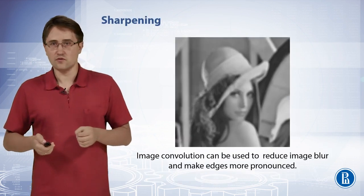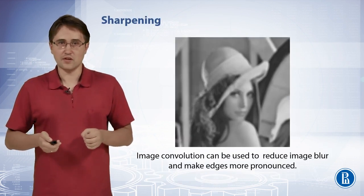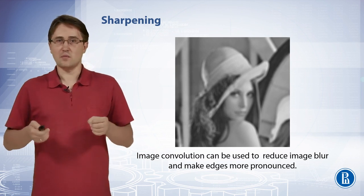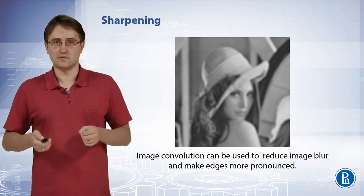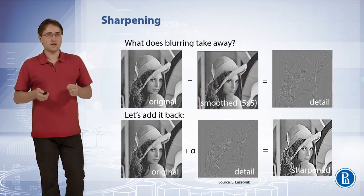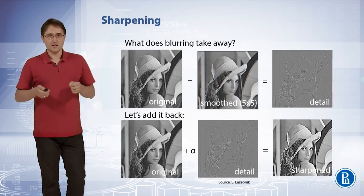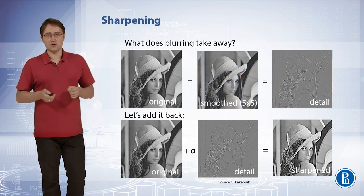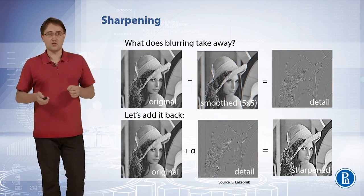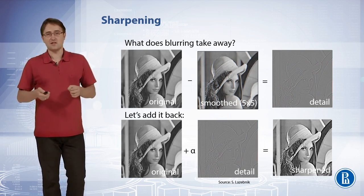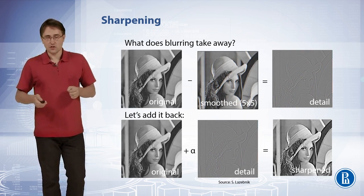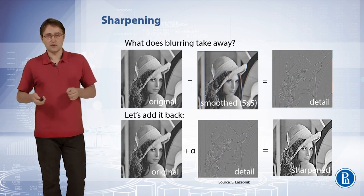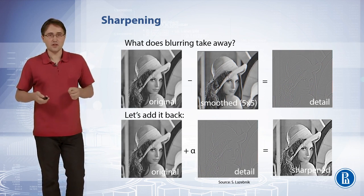Image convolution can be used for many tasks. For example, we can use image convolution to reduce image blur and make edges more pronounced. The idea of this process is very simple. Let's apply blurring and subtract the blurred image from the original image. What does blurring take away? It is information regarding sharp edges in images. We can add this information back to the original image with some scale factor, and this will make edges more pronounced and sharper. This operation is called image sharpening.